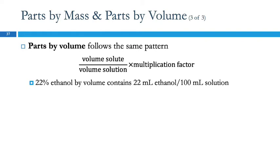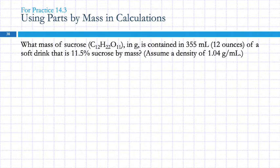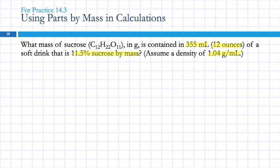There's also one that comes up occasionally: mass-volume percent, where you're looking at the mass of the solute divided by the volume of the solution. So here's a problem using parts by mass: what mass of sucrose in grams is contained in 355 milliliters — 12 ounces — of a soft drink that is 11.5% sucrose by mass? We're trying to find the mass of sucrose in grams.